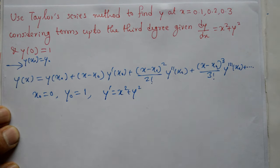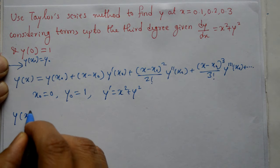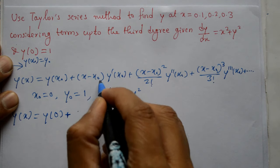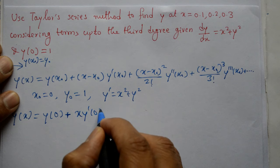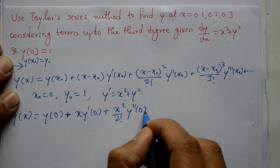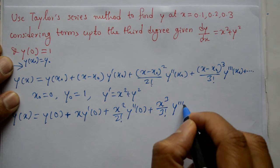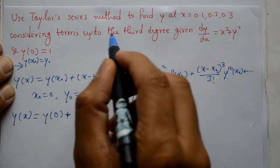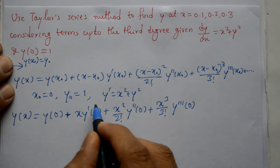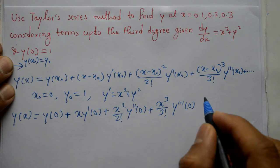y dash kya hai: x square plus y square. So y(x) = y(0) + x·y'(0) + x²·y''(0)/2! + x³·y'''(0)/3! — up to the third degree terms only. Now we need to compute y'(0), y''(0), and y'''(0) using this equation.